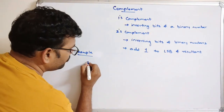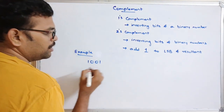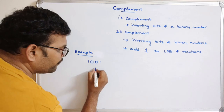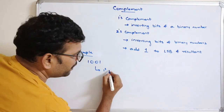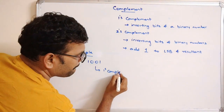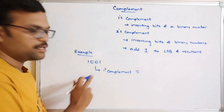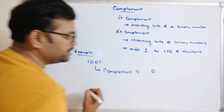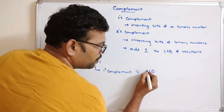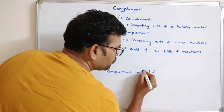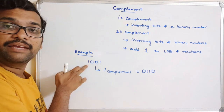Let us take an example for 1's complement and 2's complement. Let us take the binary number 1001. The 1's complement — inverting all the bits — gives us 0110. So 0110 is the 1's complement of the given number.